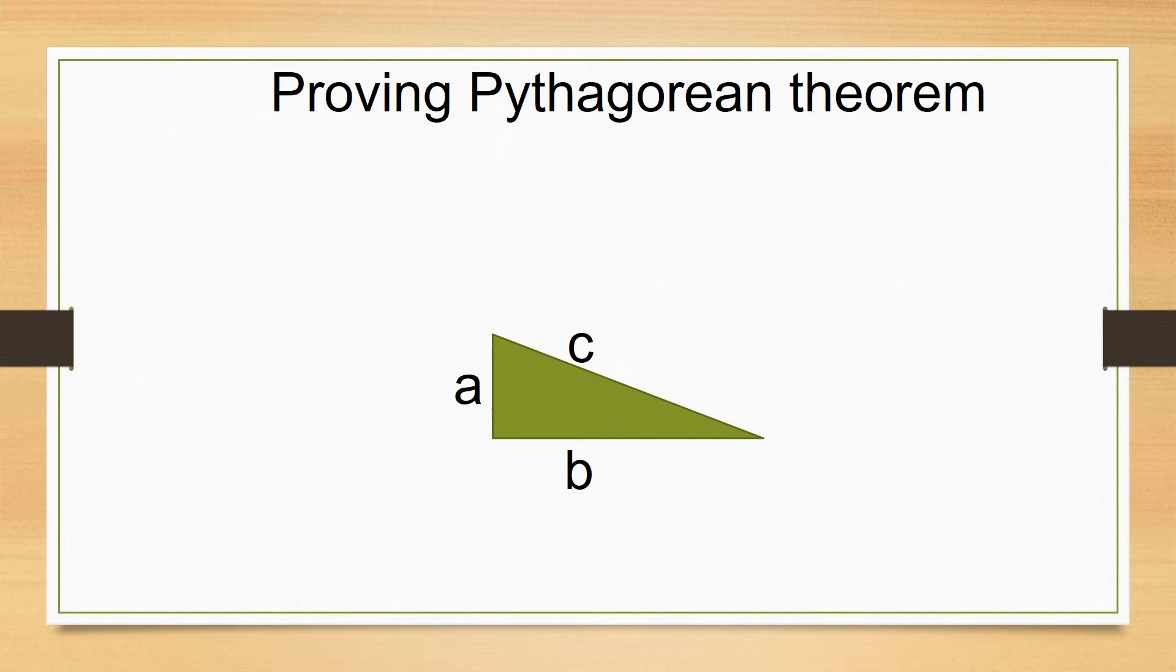Dr. BC, this is a right triangle, so Pythagoras says that a squared plus b squared equals c squared, but how can I prove it?